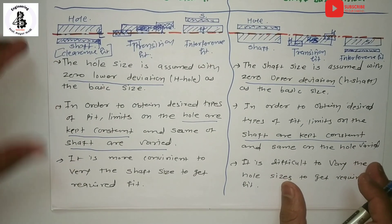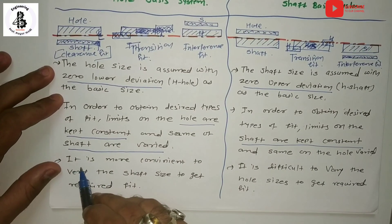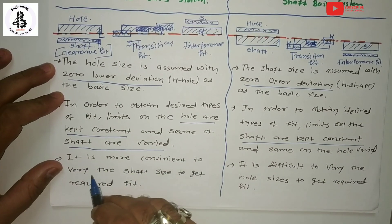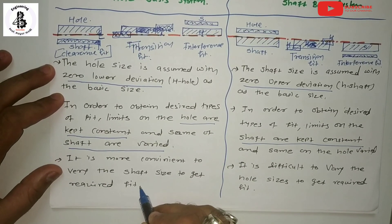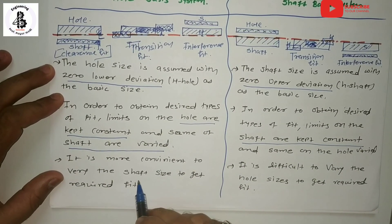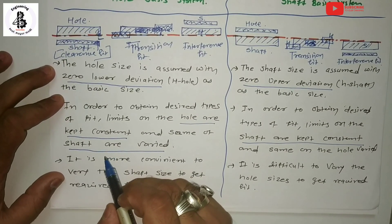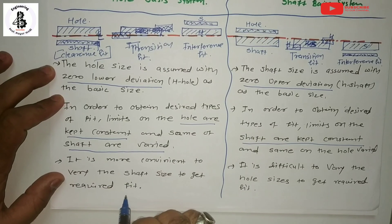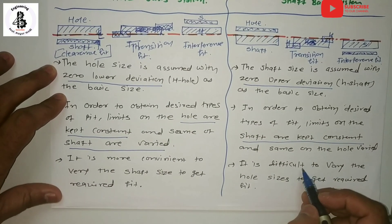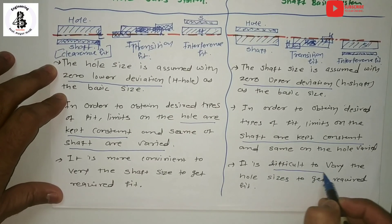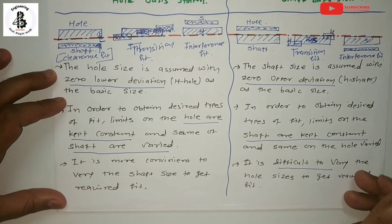For the hole basis system, it is more convenient to vary the shaft size to get the required fits. This is the convenient method for assemblies. For the shaft basis system, however, there are difficulties in varying the hole sizes to get the required fit.